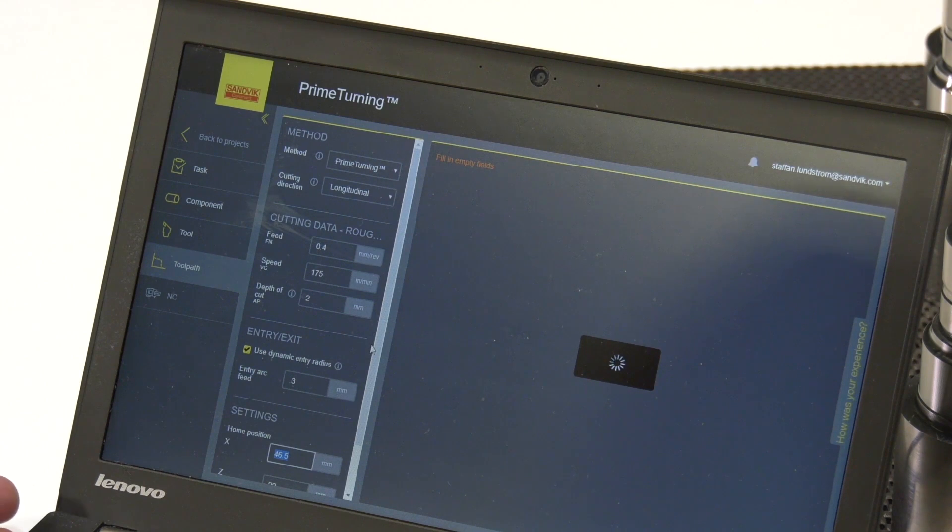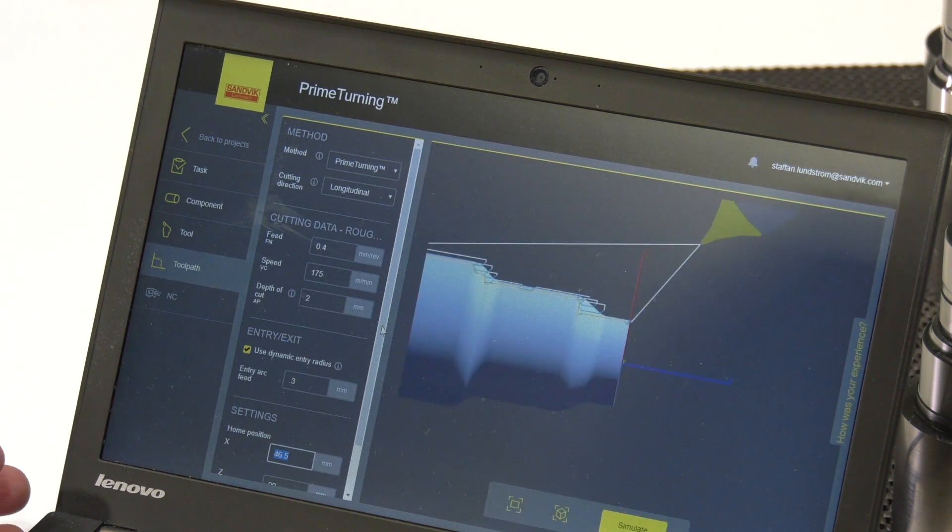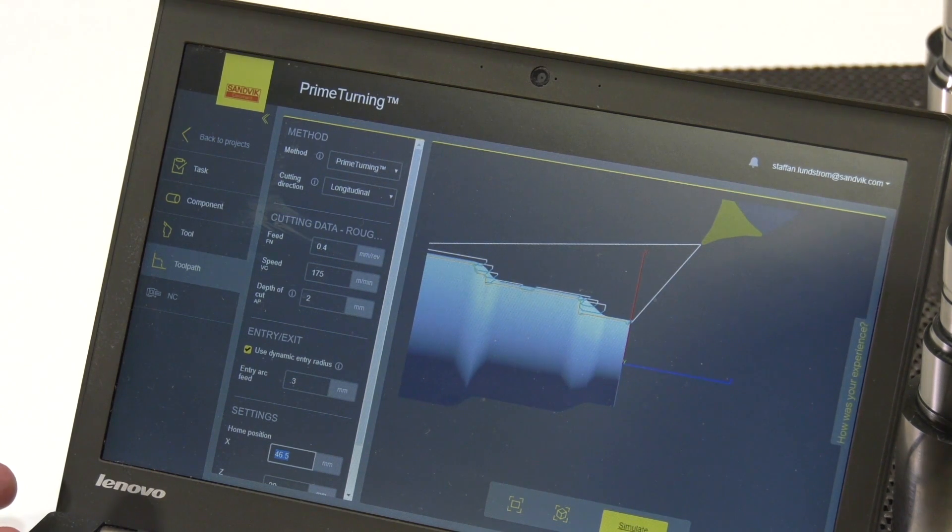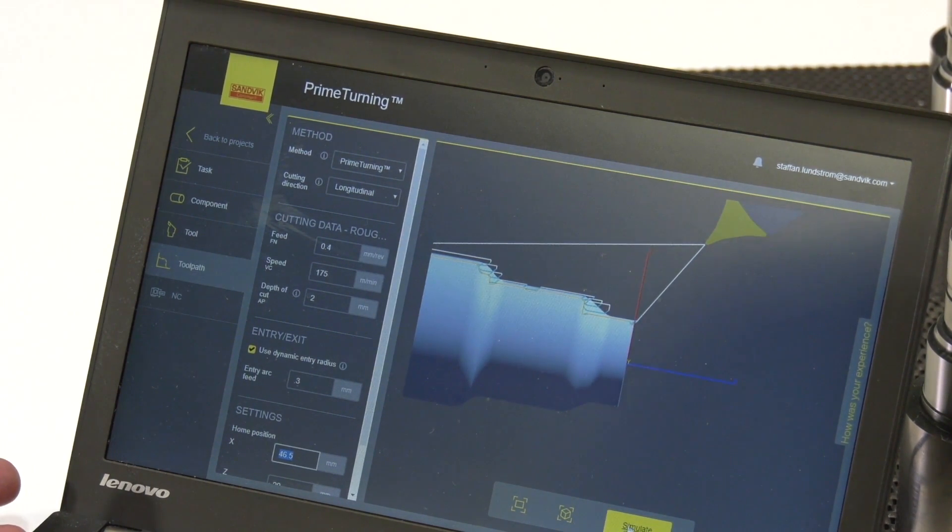So those are the input steps you do. And from here the system will generate the toolpath. And before you get the NC code you will have to run the simulation, just to verify that you are not having a collision.